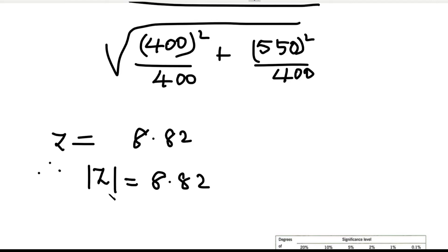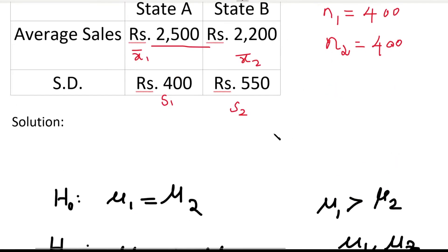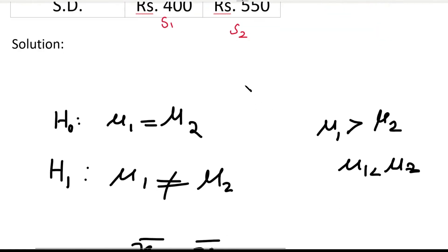Now we need the table value of Z. We need the level of significance, which in this question is 1 percentage. The level of significance alpha = 1% = 1/100 = 0.01.